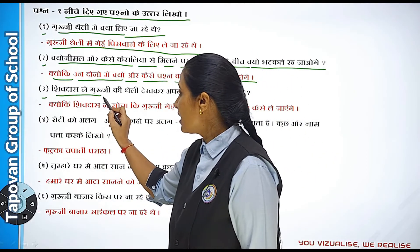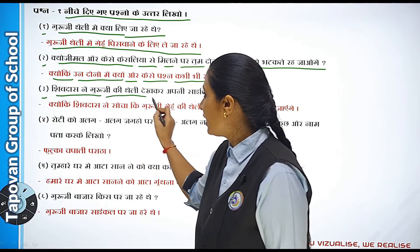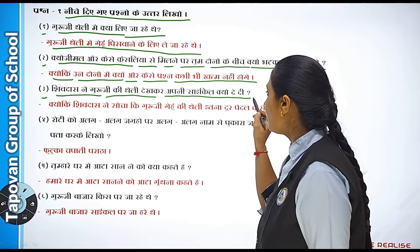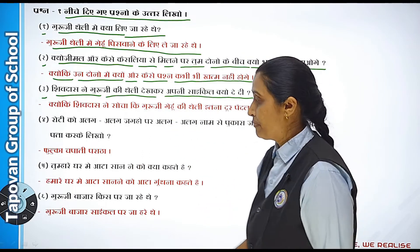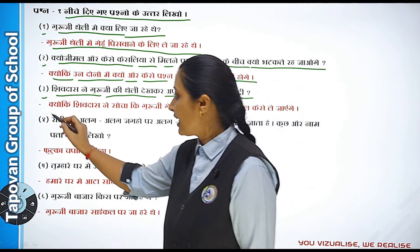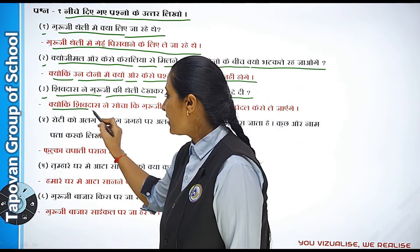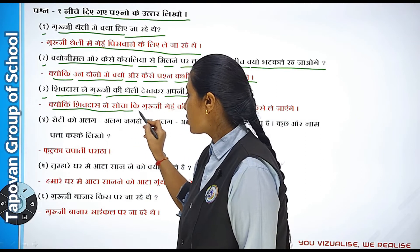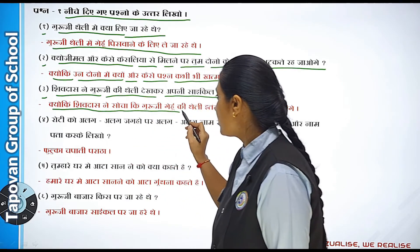Teesra hai: Sildas ne Guruji ki thaili dekhkar apni saikal kyun de di?